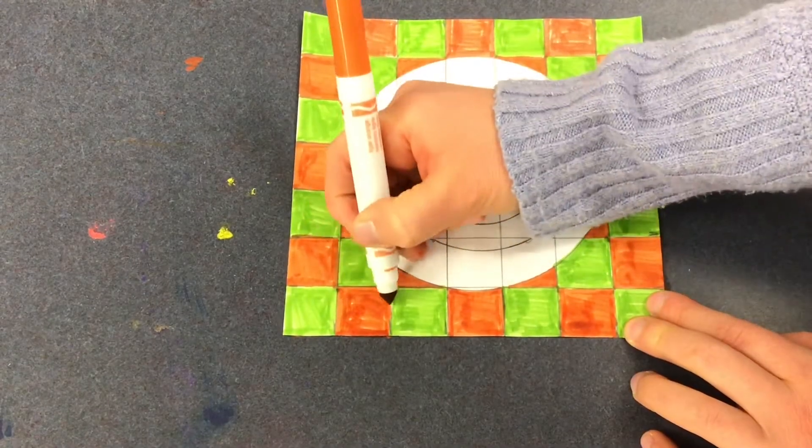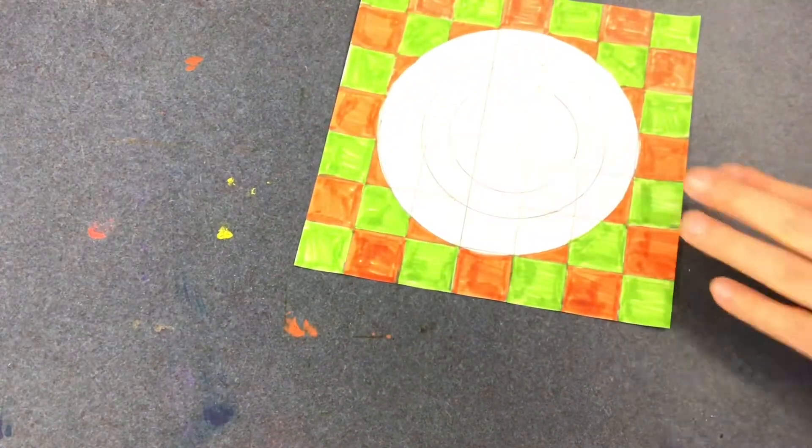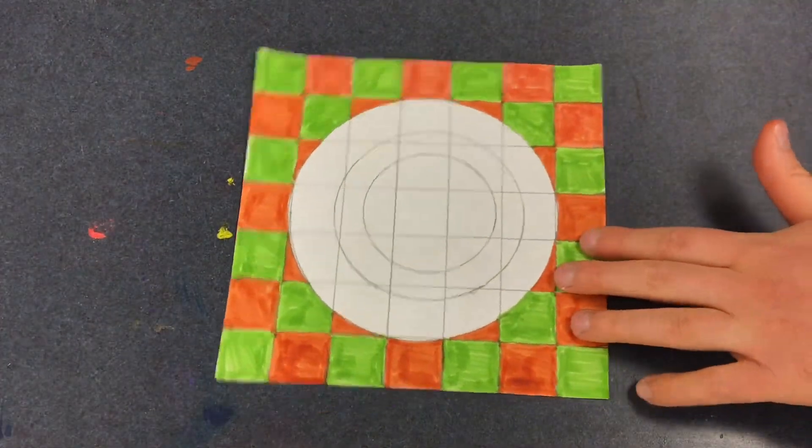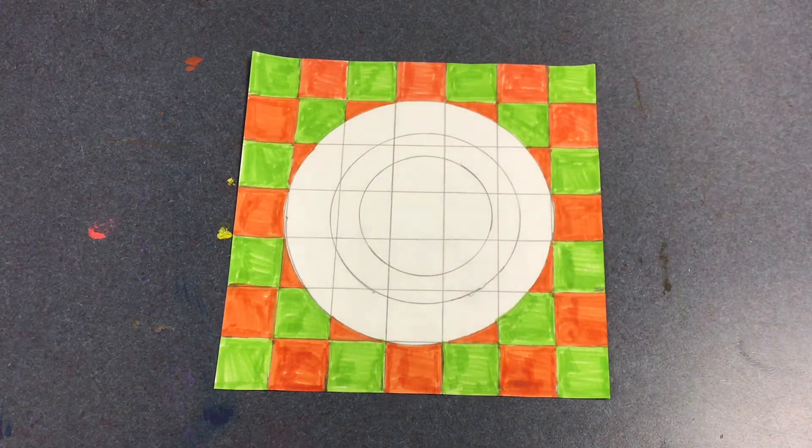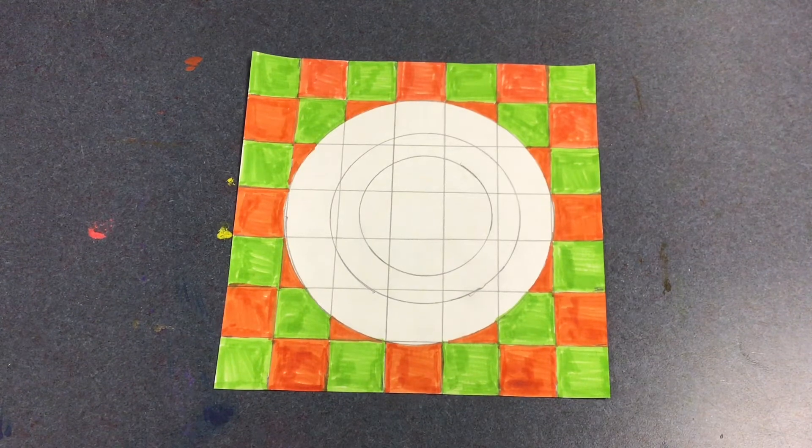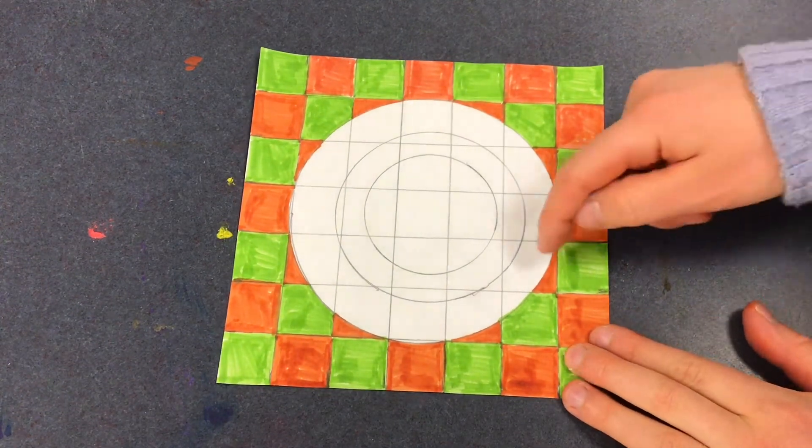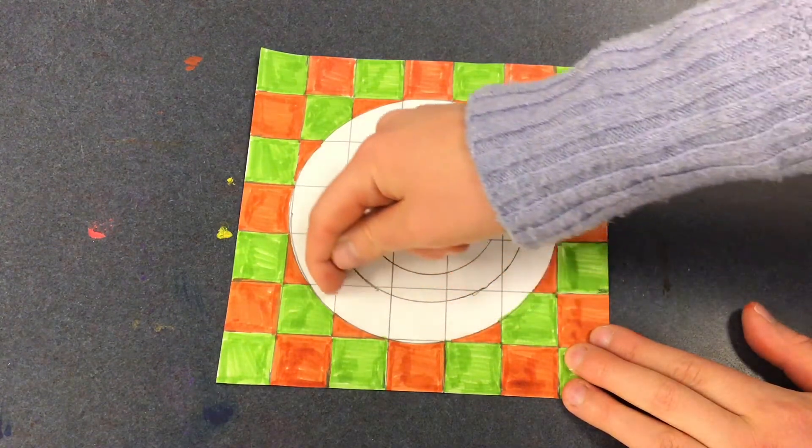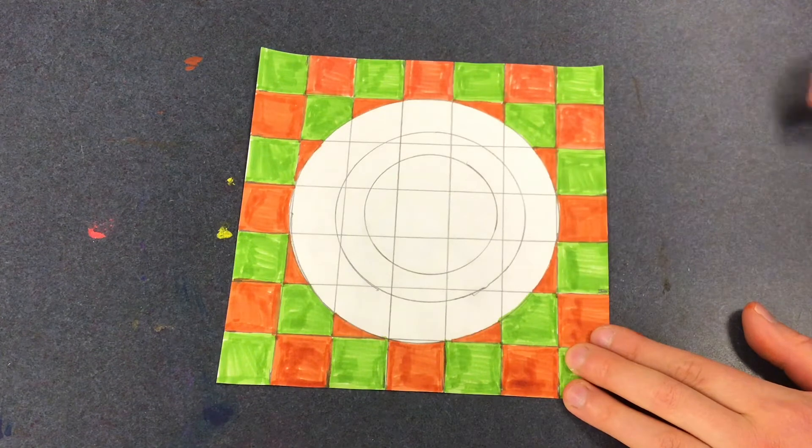All right I have finished coloring everything outside of the circles in a checkered pattern. Now it's time to enter the circle. We are going to be coloring the circle ring by ring. So notice there's an outer ring and then an inner ring and then that last circle inside.